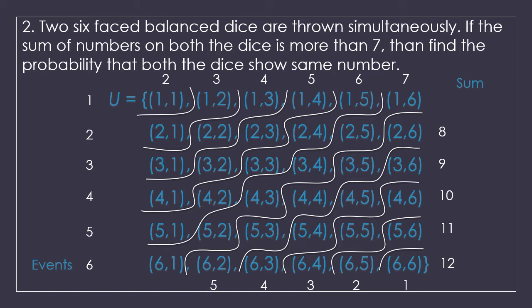Then we calculate the intersection of events — that is, sum more than 7 AND numbers are the same. Sums more than 7 with equal numbers are: (4,4), (5,5) and (6,6) — that is 3 events. So event A has 15 outcomes, event B has 6 outcomes, and event A intersection B has 3 outcomes.